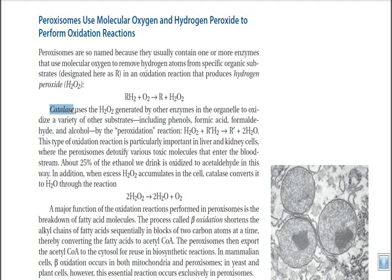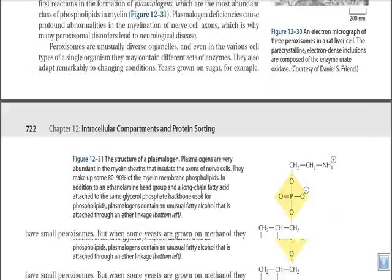In peroxisomes we have catalase enzymes and also peroxidase enzymes. What the catalase enzyme actually does is oxidize the organic substances which have hydrogen attached to them, producing hydrogen peroxide. Because this peroxide is highly toxic, the peroxidase enzyme acts on it, cleaving hydrogen peroxide into water and oxygen. Oxygen is released and water is also produced — that's how they eliminate toxic material inside our cell.